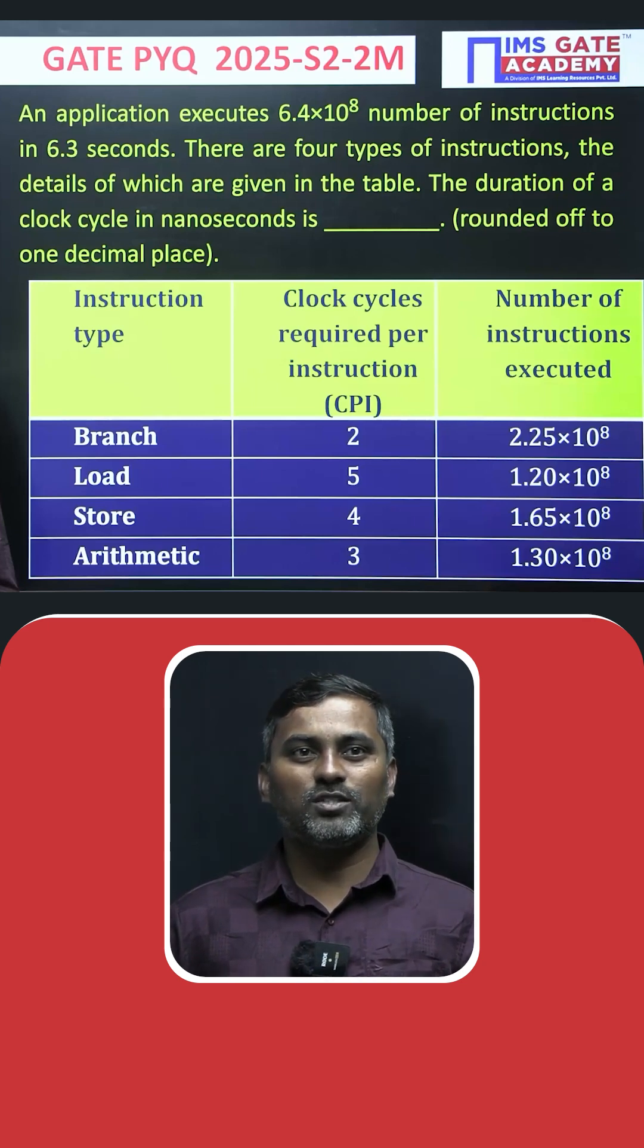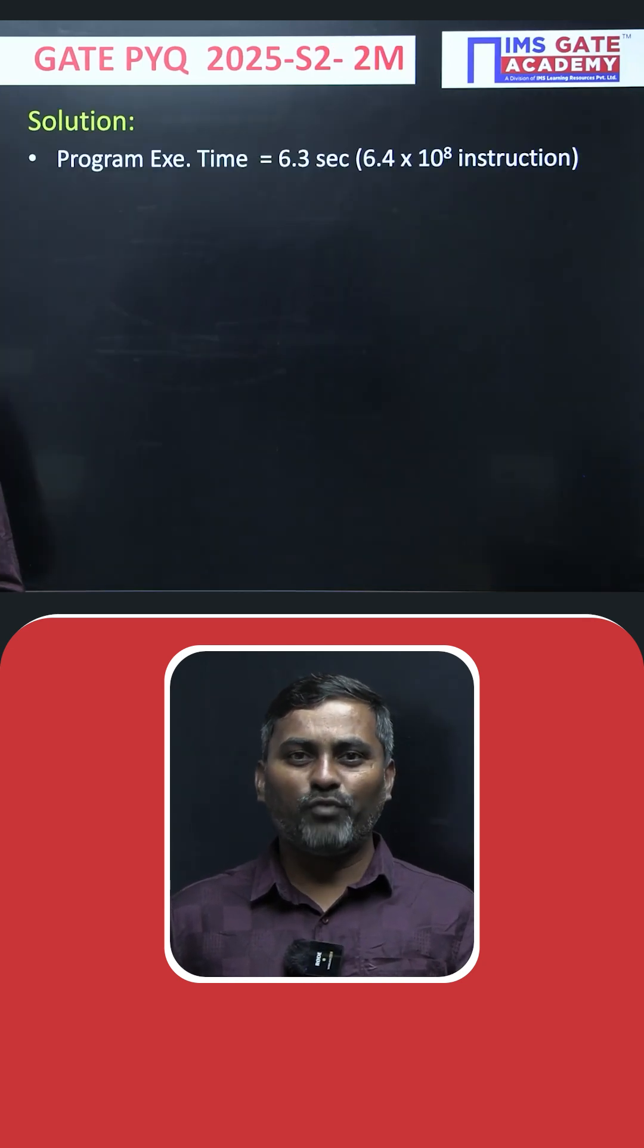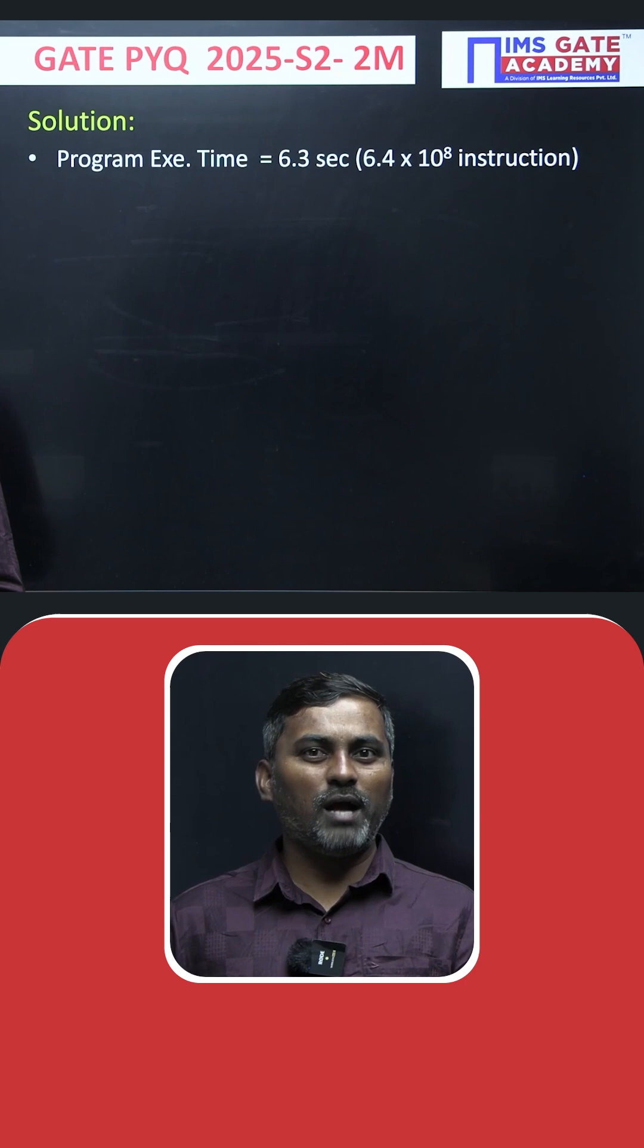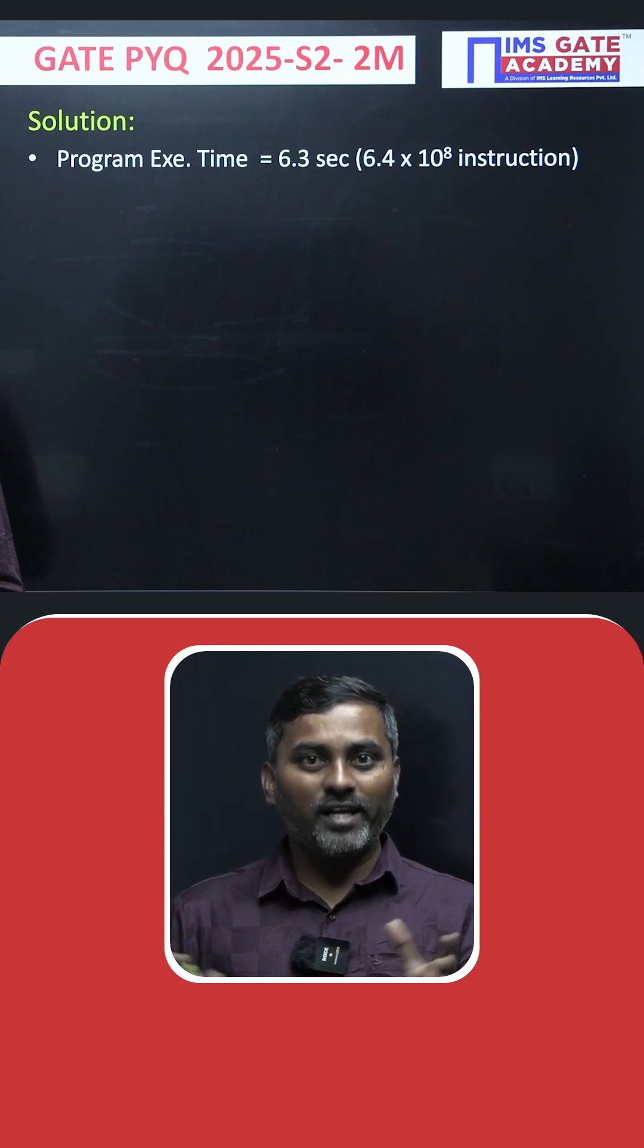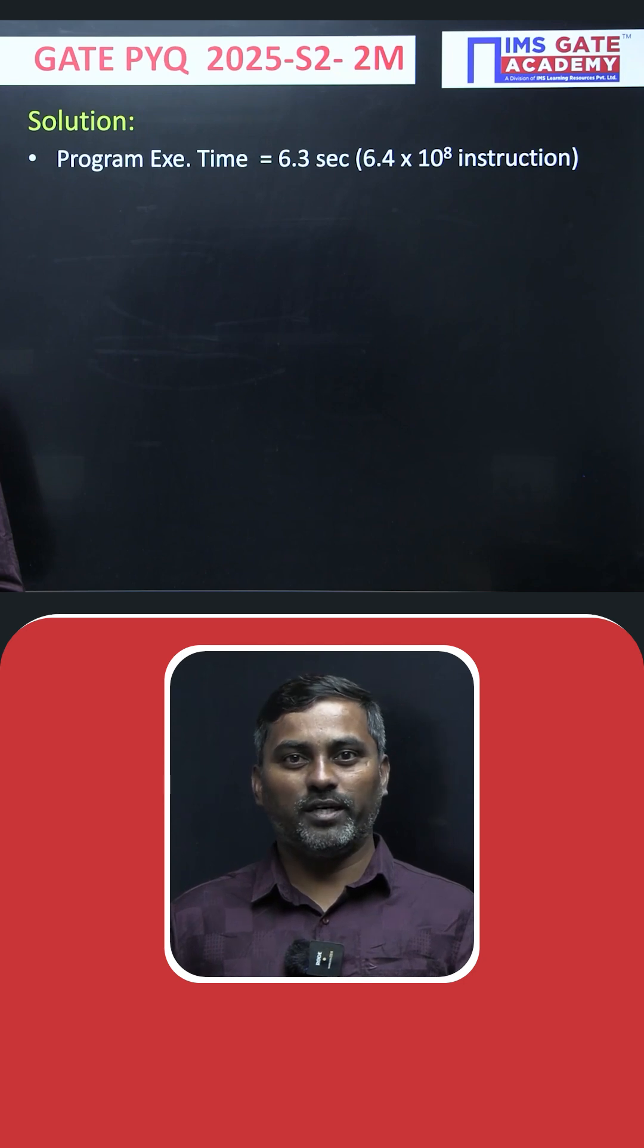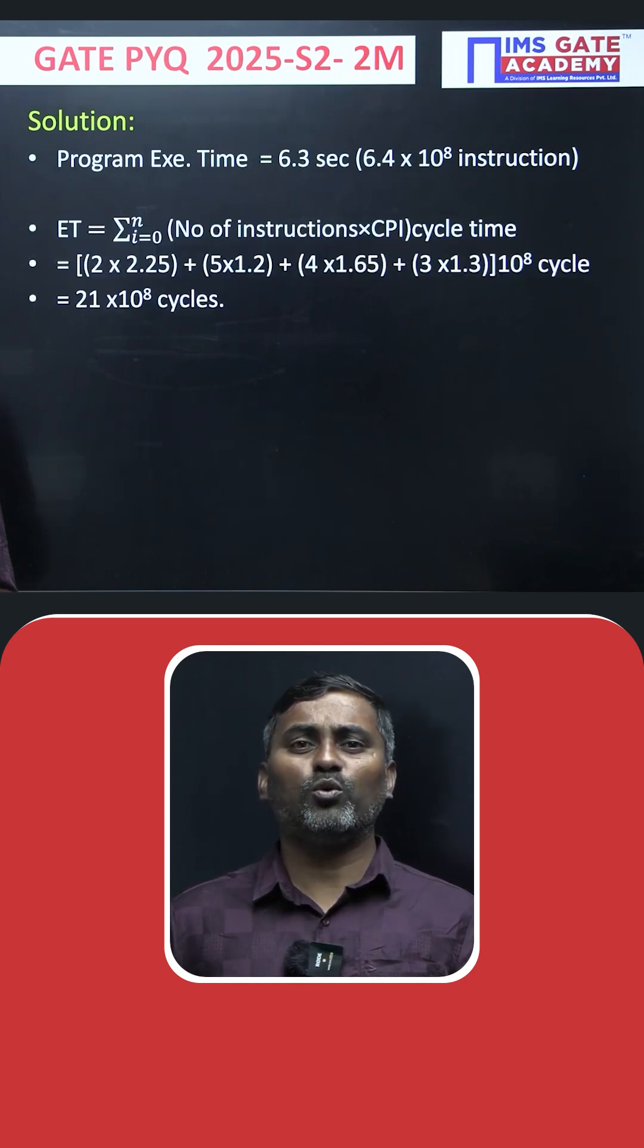Looking at the solution, we need to find the execution time. The program contains 6.4 × 10^8 instructions which are all executed in 6.3 seconds. To compute program time, we calculate: number of instructions times clock cycles per instruction times clock cycle time.